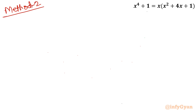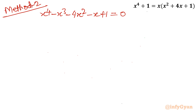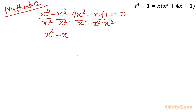Now let's talk about Method Number 2, which is more conventional and easier. We start with x⁴ - x³ - 4x² - x + 1 = 0 and divide through by x². This gives x² - x - 4 - 1/x + 1/x² = 0.